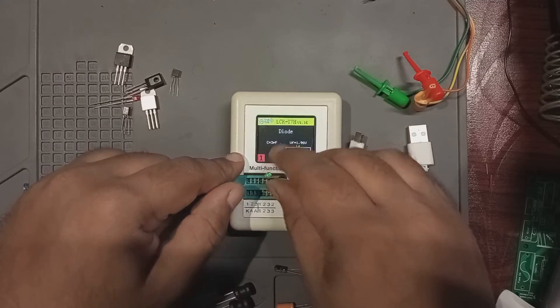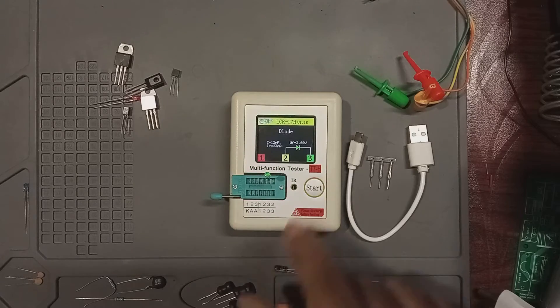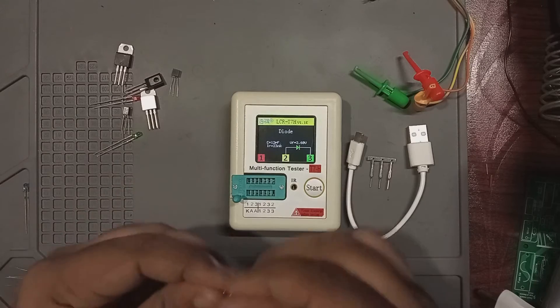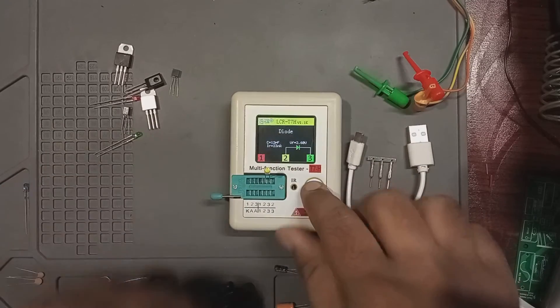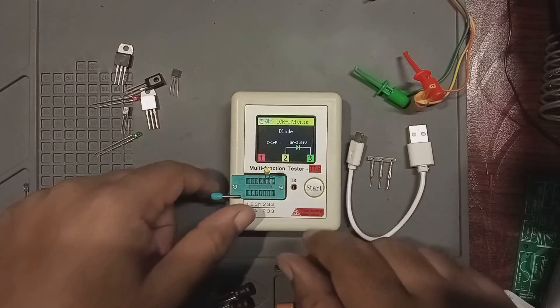Let's now test the green LED which should have something like 2.6, 2.7 forward voltage drop. And yes it is. And now if I connect the yellow one again, it measures to 2.01 volts.